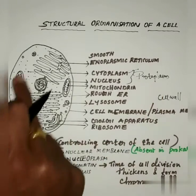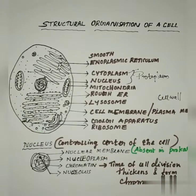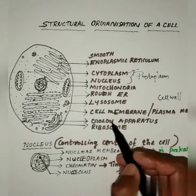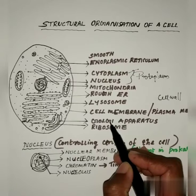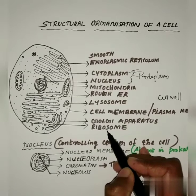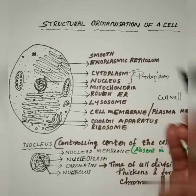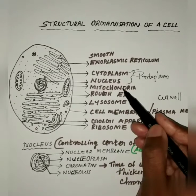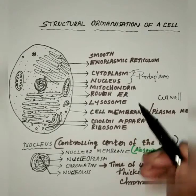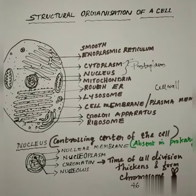Inside the cytoplasm, many cell organelles are present — like lysosome, Golgi apparatus, ribosome, endoplasmic reticulum, mitochondria, etc. One by one, we will be discussing the structural organization of the cell.